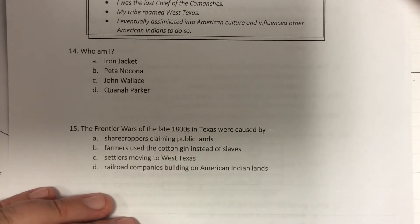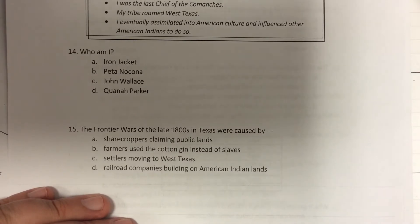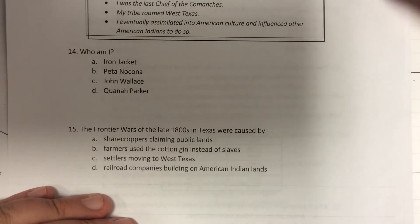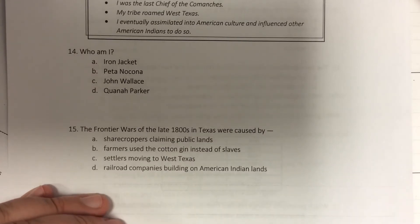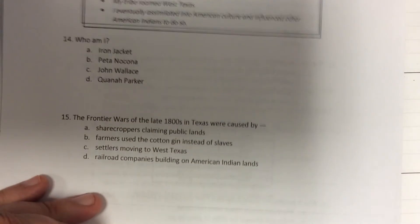Question 15: The frontier wars of the late 1800s in Texas were caused by: sharecroppers claiming public lands; farmers using the cotton gin instead of slaves; settlers moving to West Texas; railroad companies building on American Indian lands.